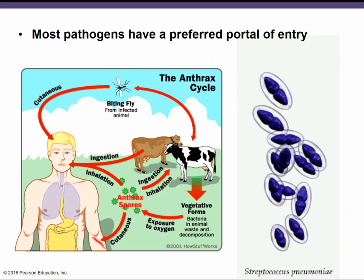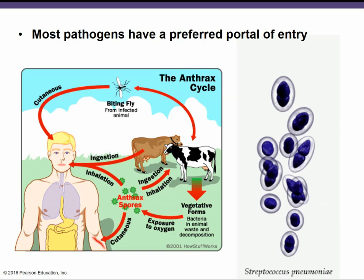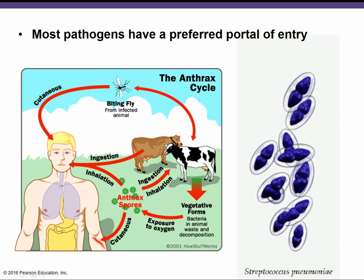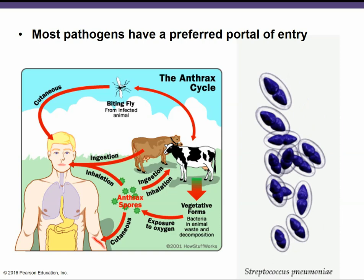Even after microbes have entered the body, they don't necessarily cause disease. The pathogenicity of a microbe depends on several factors, one of which is which portal of entry is used. Most pathogens have a preferred portal of entry where they cause the most damage. For example, streptococci that are inhaled can cause pneumonia, but if you swallow them, they'll just be killed by stomach acid — they have to enter through the respiratory system. However, some pathogens can cause disease from multiple portals of entry.